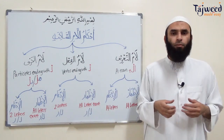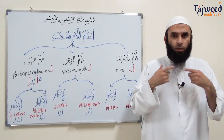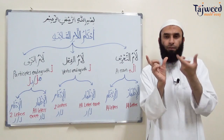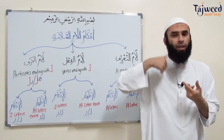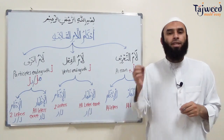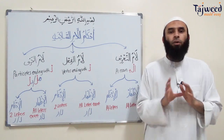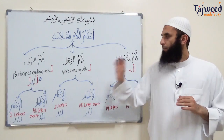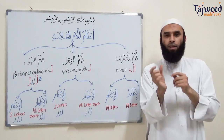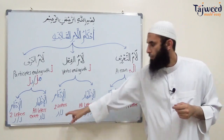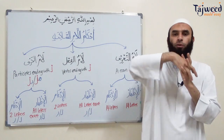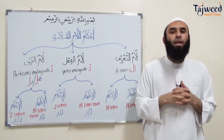الإظهار means we're going to pronounce the لام clearly. If a verb ends with اللام الساكنة and the following word starts with any letter in the Arabic language except for two - لام and را - then this لام is going to be pronounced clearly. But if the following word starts with لام or را, then this لام would merge onto that letter.